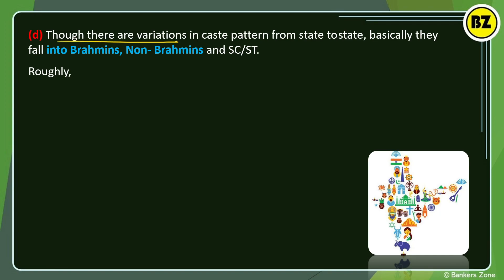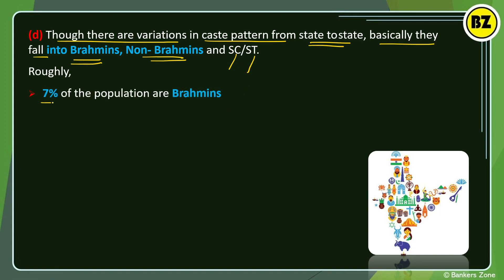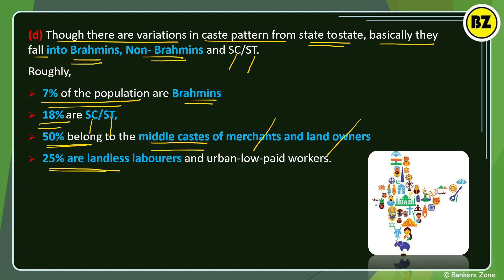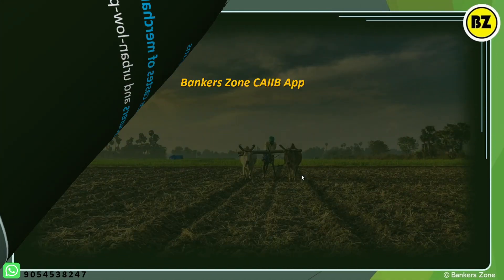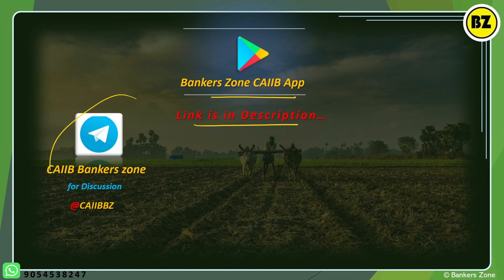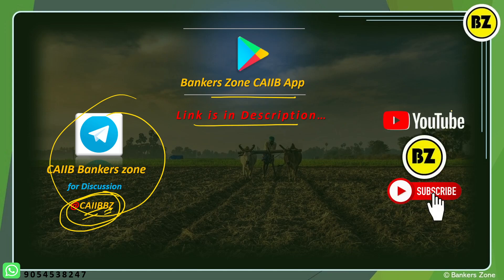Though there are variations in caste patterns from state to state, roughly they fall into Brahmans (about 7%), scheduled castes and scheduled tribes (about 18%), middle castes of merchants and landowners (about 50%), and the remaining 25% are landless laborers or urban low-paid workers. This concludes the first part of this section on rural society characteristics.